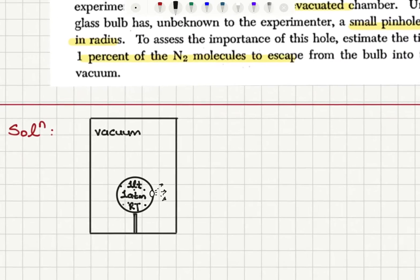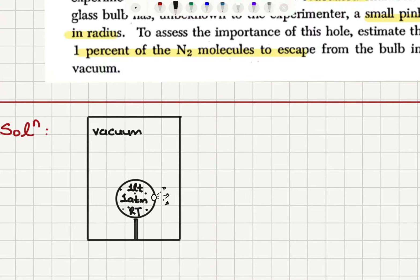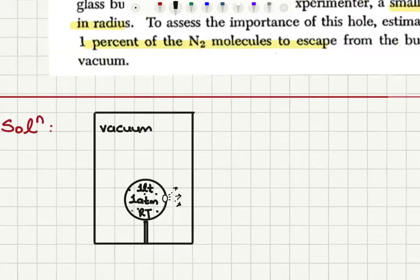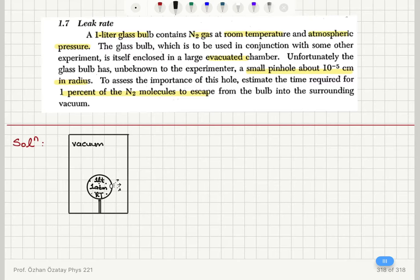So let's envision what's happening here. We have a vacuum inside the container and then we have a glass bulb which contains one liter at one atmosphere and room temperature nitrogen gas. And there is a small pinhole here and these gas molecules can escape from the pinhole. And we want to know how long it will take to lose 1% of the nitrogen gas.